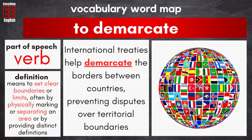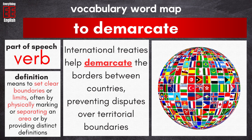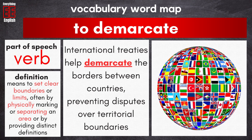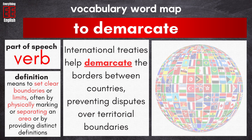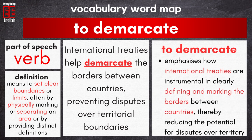International treaties help demarcate the borders between countries, preventing disputes over territorial boundaries. In this example, demarcate emphasizes how international treaties are instrumental in clearly defining and marking the borders between countries, thereby reducing the potential for disputes over territory.